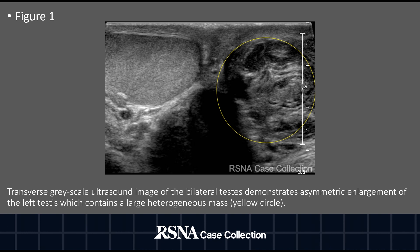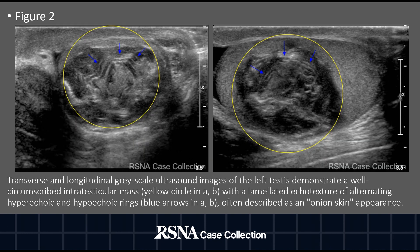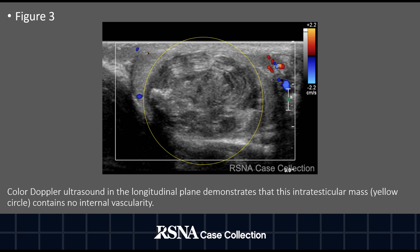Transverse grayscale ultrasound image of the bilateral testes demonstrates asymmetric enlargement of the left testis, which contains a large heterogeneous mass. Additional transverse and longitudinal grayscale ultrasound images demonstrate that this well-circumscribed intratesticular mass has a lamellated echo texture of alternating hyperechoic and hypoechoic rings, often described as an onion skin appearance — an important defining feature. Color Doppler ultrasound demonstrates no internal vascularity within this mass.